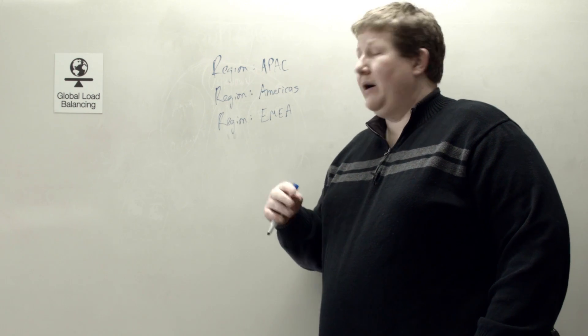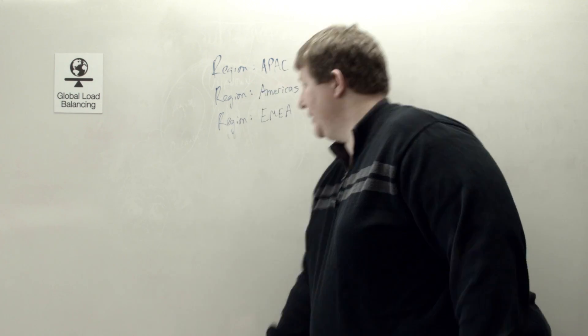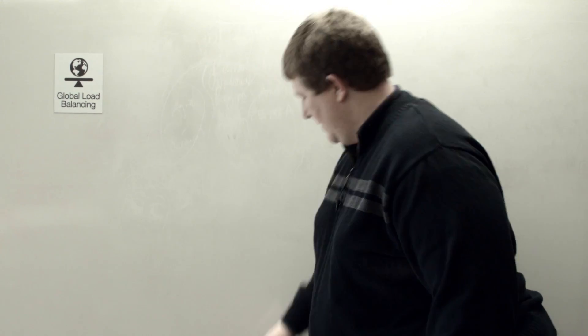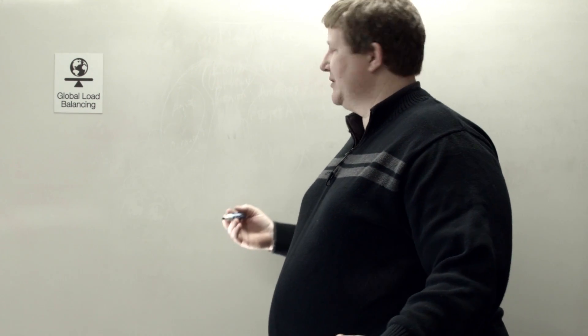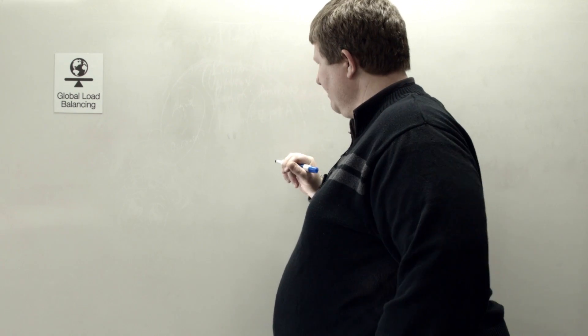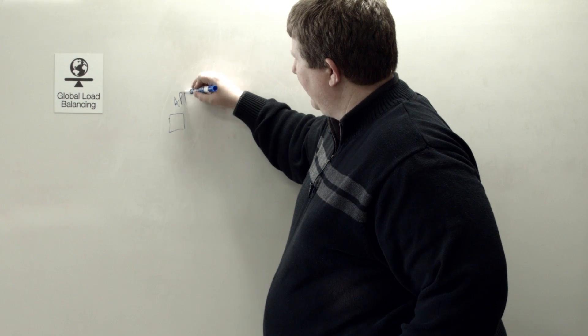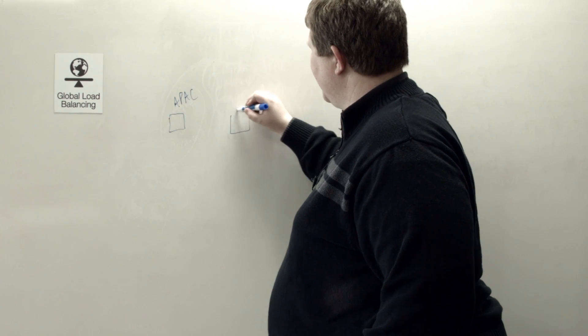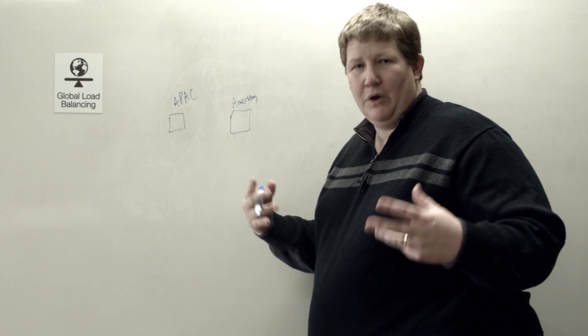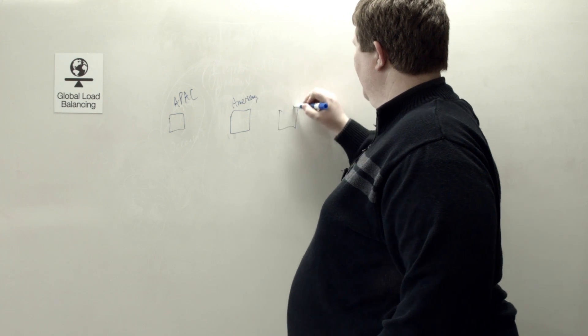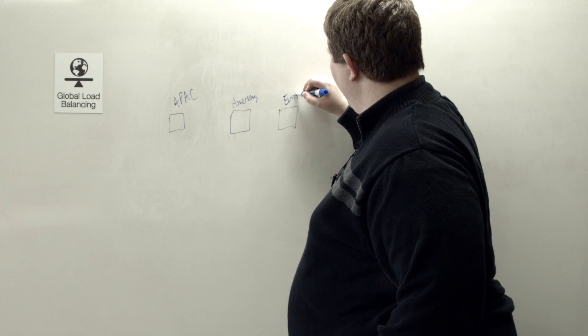And so now that I know what my regions are, I can create topology records based on those regions. That gives me the ability to say I have data centers in multiple places. Say I have one data center in that APAC region, and I have a data center here in the Americas. And likely I have multiple in each area, but for the sake of the example we'll keep it small. And say I have a data center in Europe.